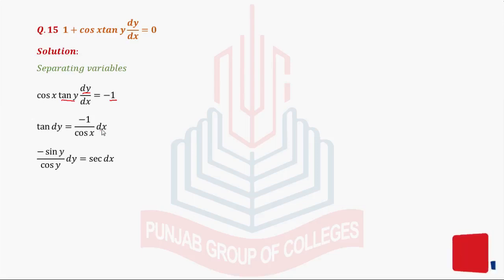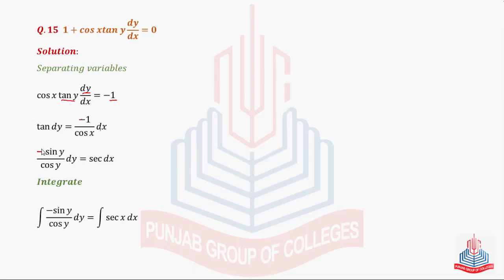Tan y ko hum likh sakte hain sin y over cos y dy, aur 1 over cos x is basically secant x. Ye minus humne left side par shift kar diya — isliye ki jab hum integration apply karenge to fraction hai, denominator ka derivative upar maujood hai, yaani cos y ka derivative minus sin y hota hai, isliye ye wala minus left side par shift kar diya tha.